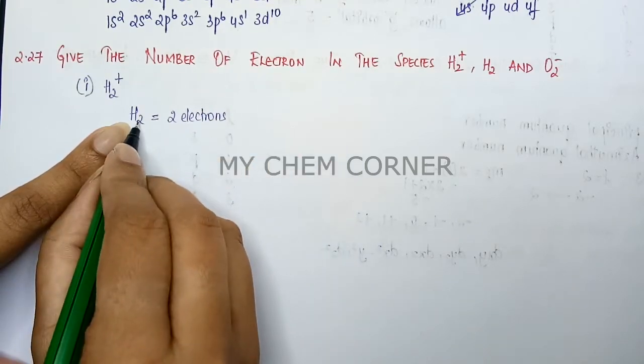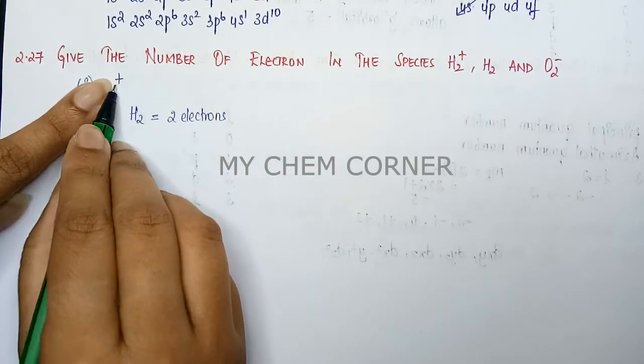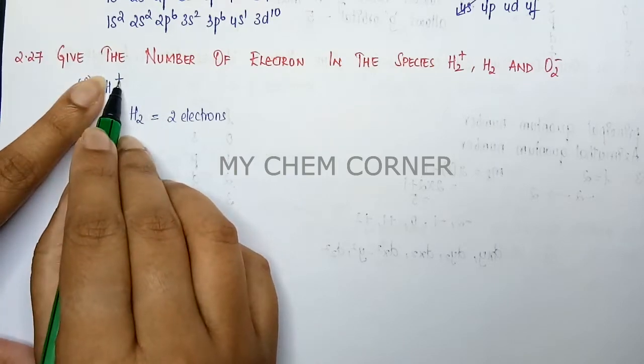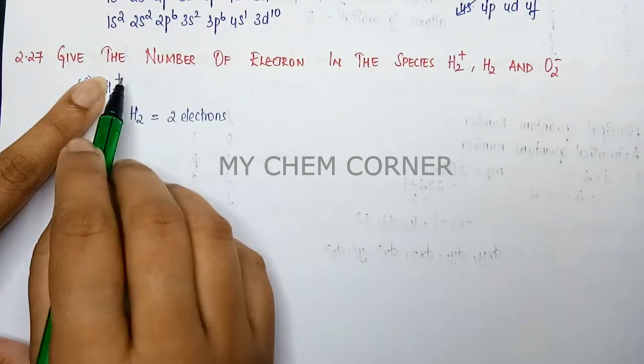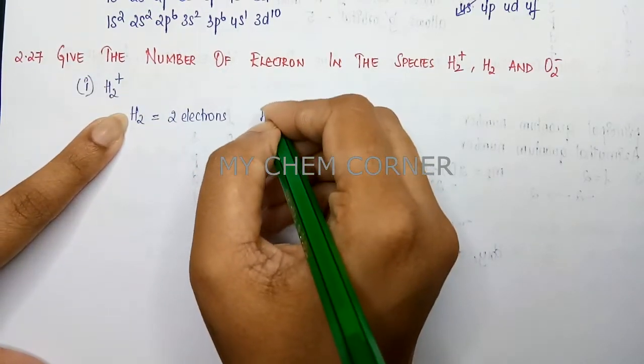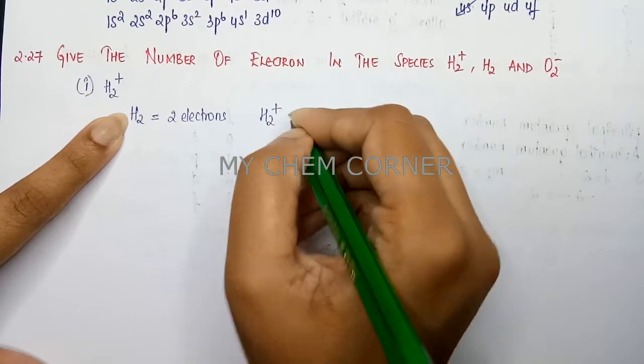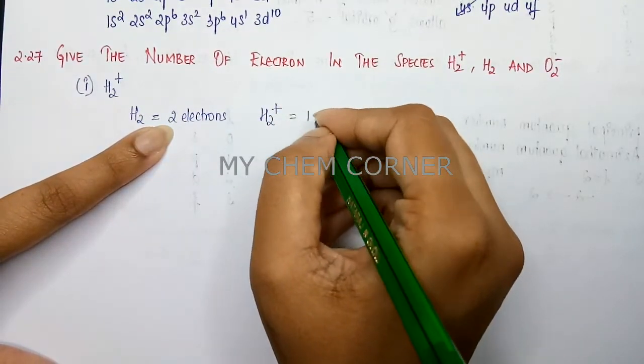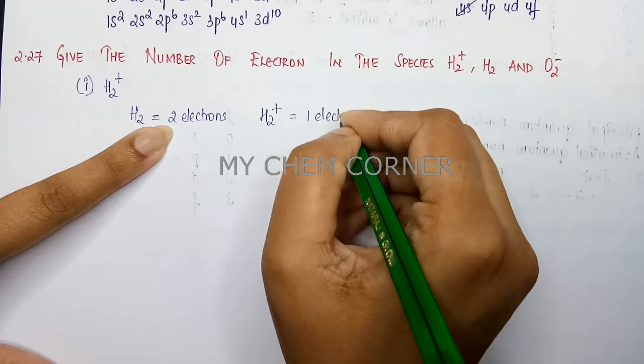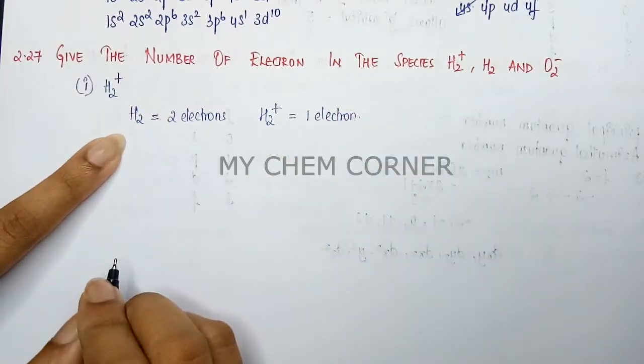Now from this H2, I am getting +1 charge, which means plus meaning removal of an electron. So H2+ means I'm removing one electron. Therefore this will have only one electron.